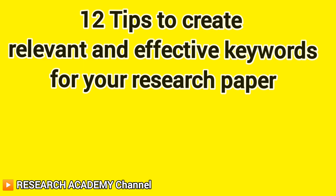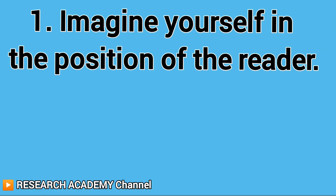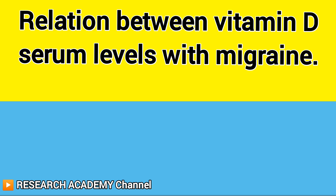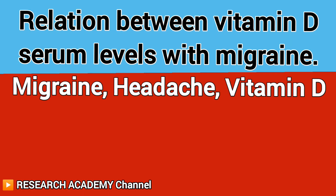12 Tips to Create Relevant and Effective Keywords for Your Research Paper. Tip 1: Imagine yourself in the position of the reader. What keywords will the reader search for that will help them find your article? For example, if your paper title is 'Relation Between Vitamin D Serum Levels with Migraine,' the reader will likely use keywords like: Migraine, Headache, Vitamin D.